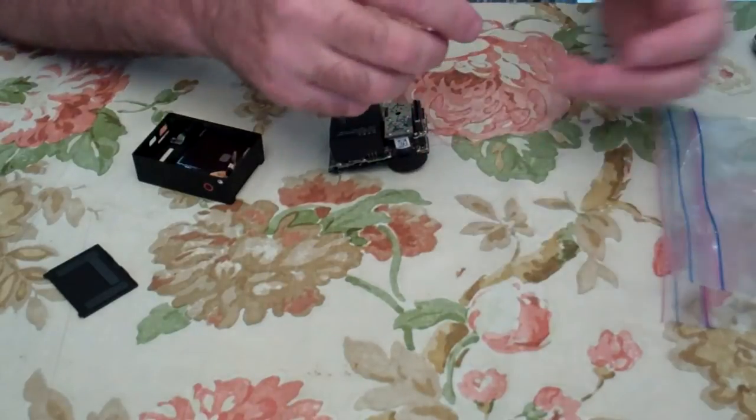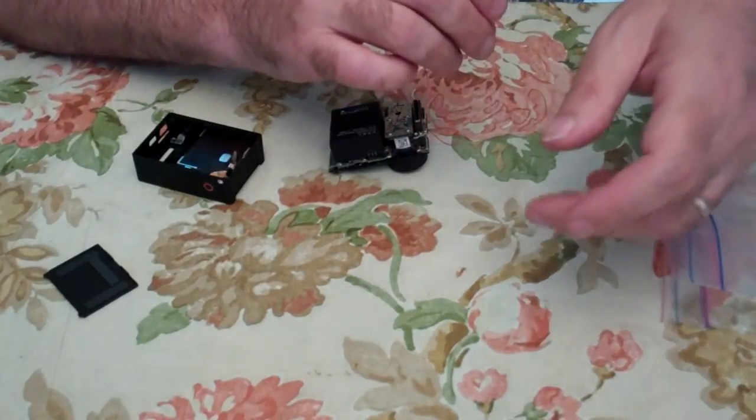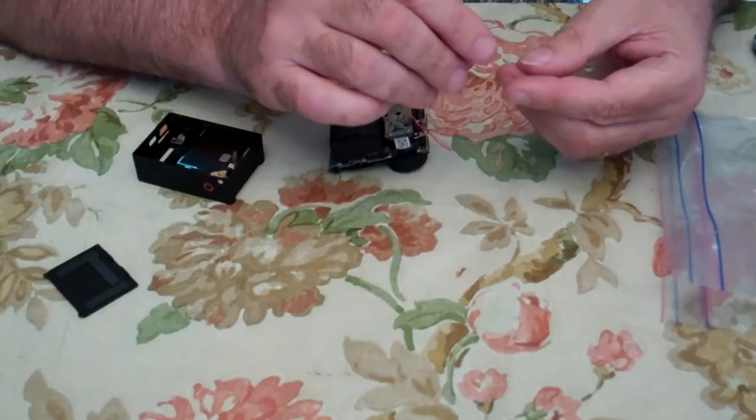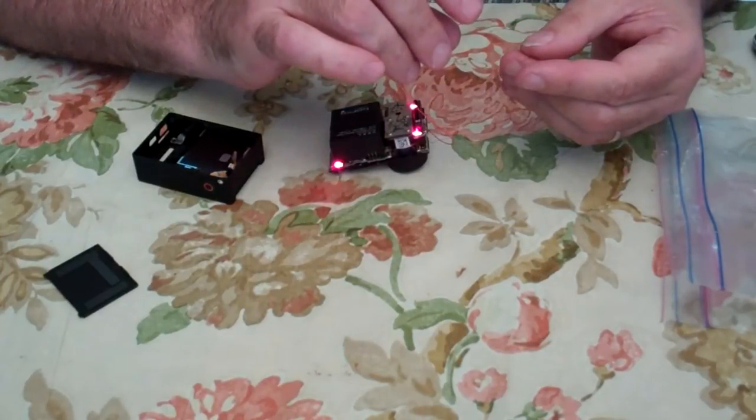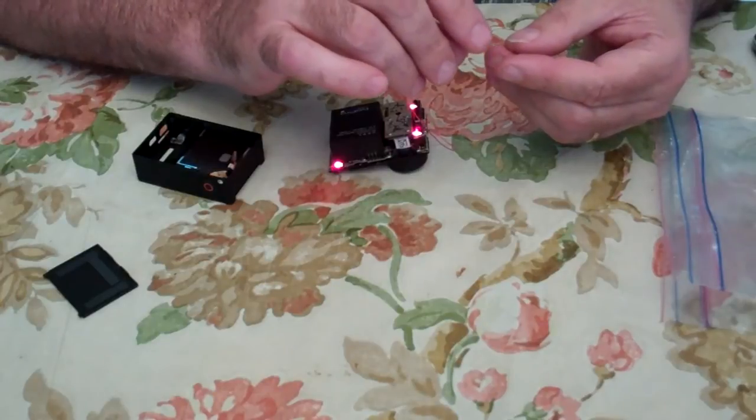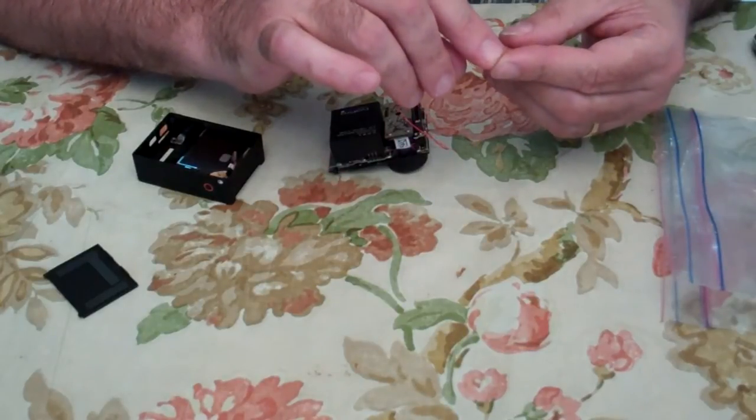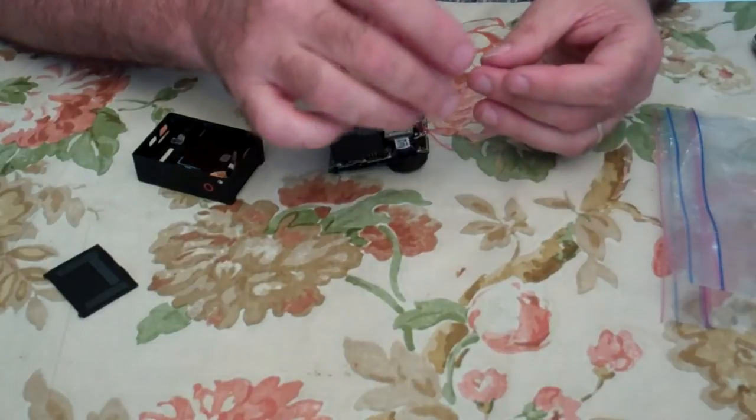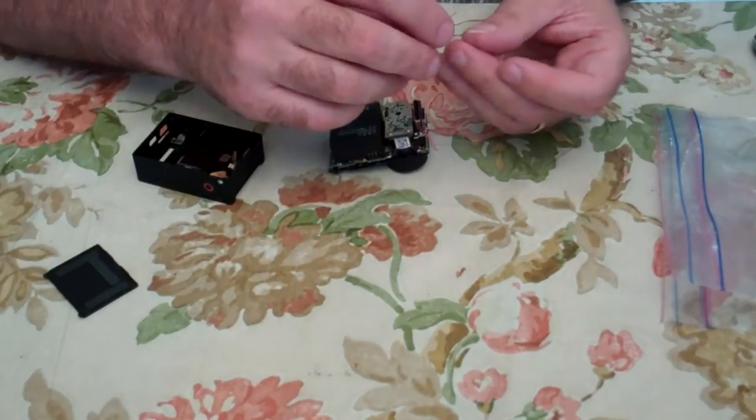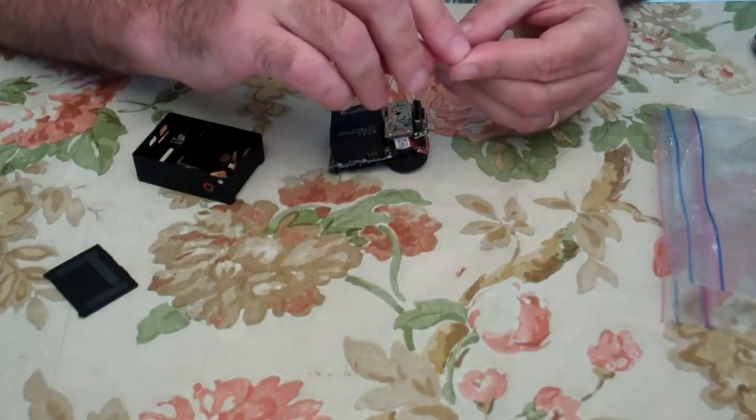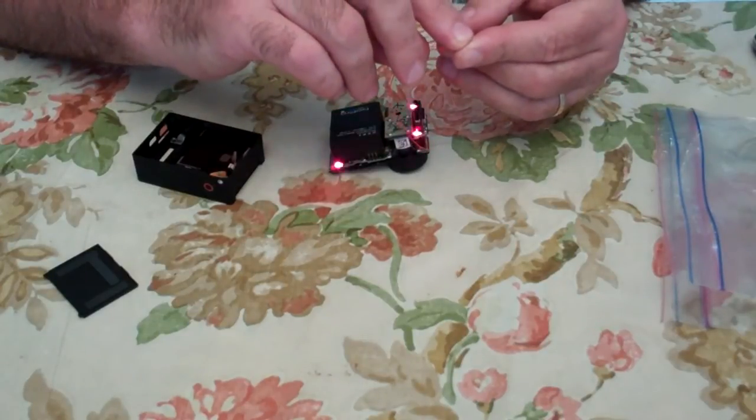Next, we're going to test the shutter by grounding the shutter wire. Alright, it's recording. We're going to turn off the recording by grounding it again. And finally, we're going to turn off the camera.